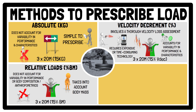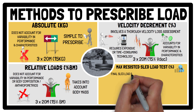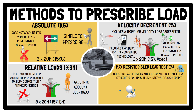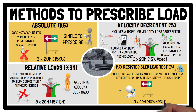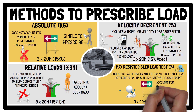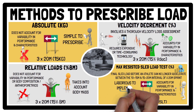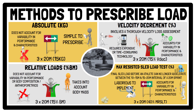And last but not least, performing the maximum resisted sled load test protocol requires loads to be incrementally increased, starting from 15% of body mass, until the maximum resisted sled load is achieved — which is the final sled load before an athlete can no longer accelerate between the 10–15 and 15–20m interval of a 20m linear sprint. Therefore, the maximum resisted sled load test provides a reference point to prescribe load, rather like a percentage of 1RM — for example, 3x20m at 40% of the maximum resisted sled load test value. However, the test protocol is laborious to implement and, like velocity decrement, requires expensive equipment such as timing gates, or mobile apps and video analysis technology, which can be time-consuming to use.